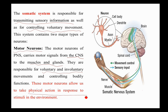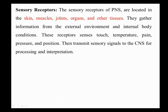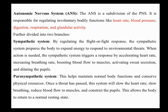Based on the stimuli we perceive, we can perform physical actions. Sensory receptors of the peripheral nervous system are located in the skin, muscles, joints, organs, and other tissues. They gather information from the external environment and internal body conditions, sensing touch, temperature, pain, pressure, and position. These receptors transmit sensory signals to the central nervous system for processing and interpretation.